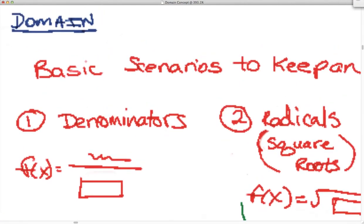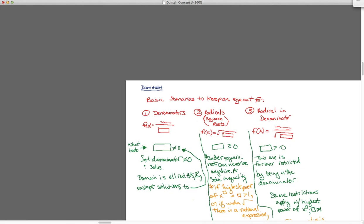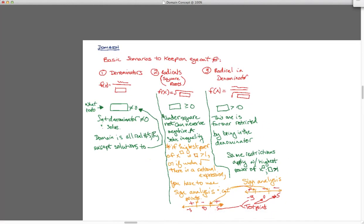Hello and welcome to another one of these ADD videos. Today we're going to be looking at the concept of domain. Domain basically is the collection of all the defined x values or your independent variable, and there are three basic scenarios that you can look out for that'll make your life much easier to deal with this concept.